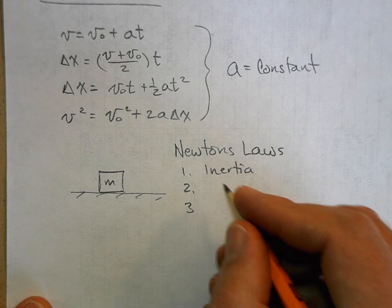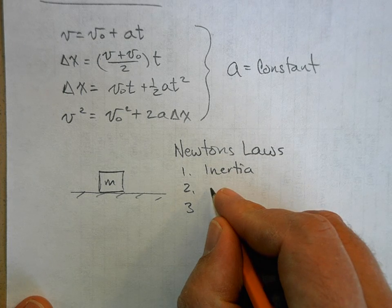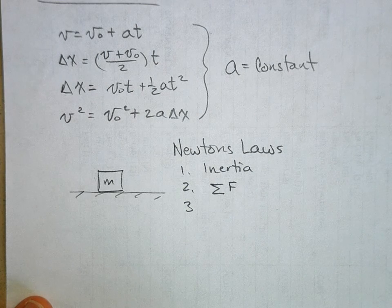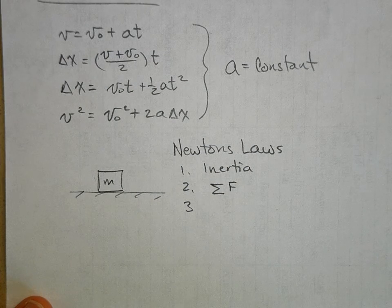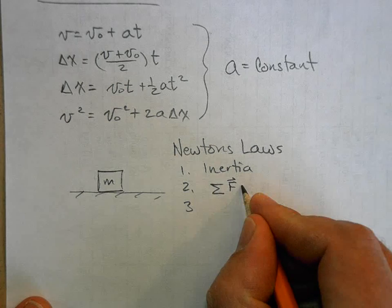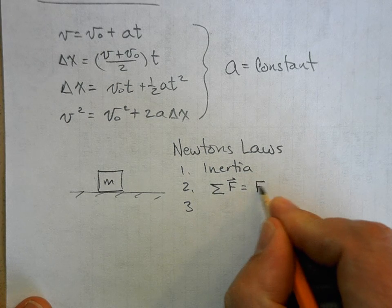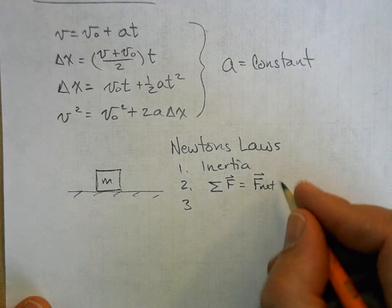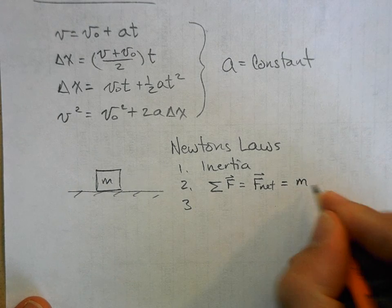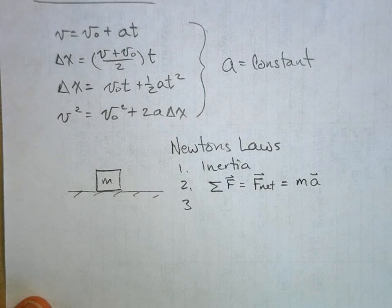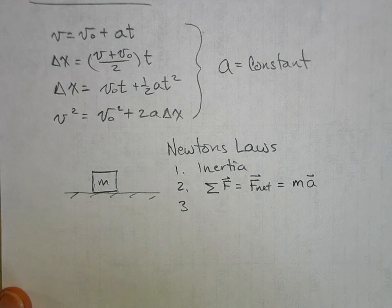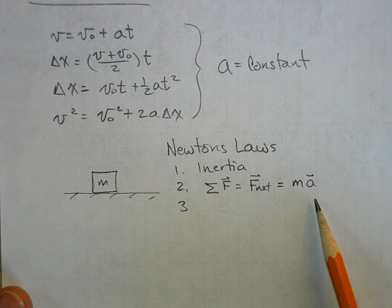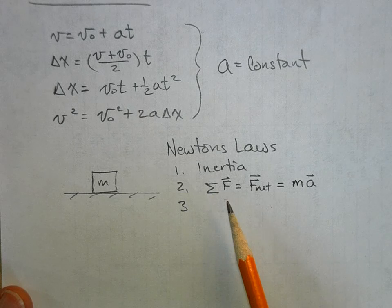Then we have Newton's second law, which basically says if I add up all the forces acting on an object—and I have to add them together as vectors—that will be equal to the net force. When I add up all the forces, what's left over is my net force, and my net force is equal to the mass of the object times its acceleration. This gives us the cause of acceleration: a net force.